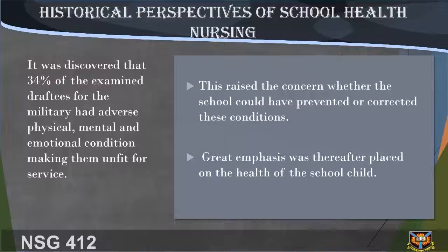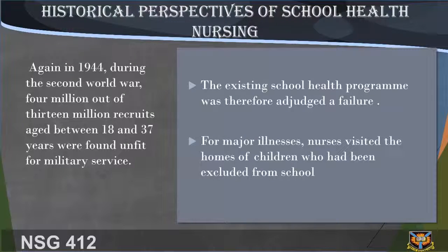Great emphasis was thereafter placed on the health of the school child; however, this emphasis was erroneously skewed in favor of physical education as if it were the same as health education, so the desired improvements were not met. Again, in 1944 during the Second World War, 4 million out of 13 million recruits aged between 18 and 37 years were found unfit for military service. The existing school health program was therefore adjudged a failure.